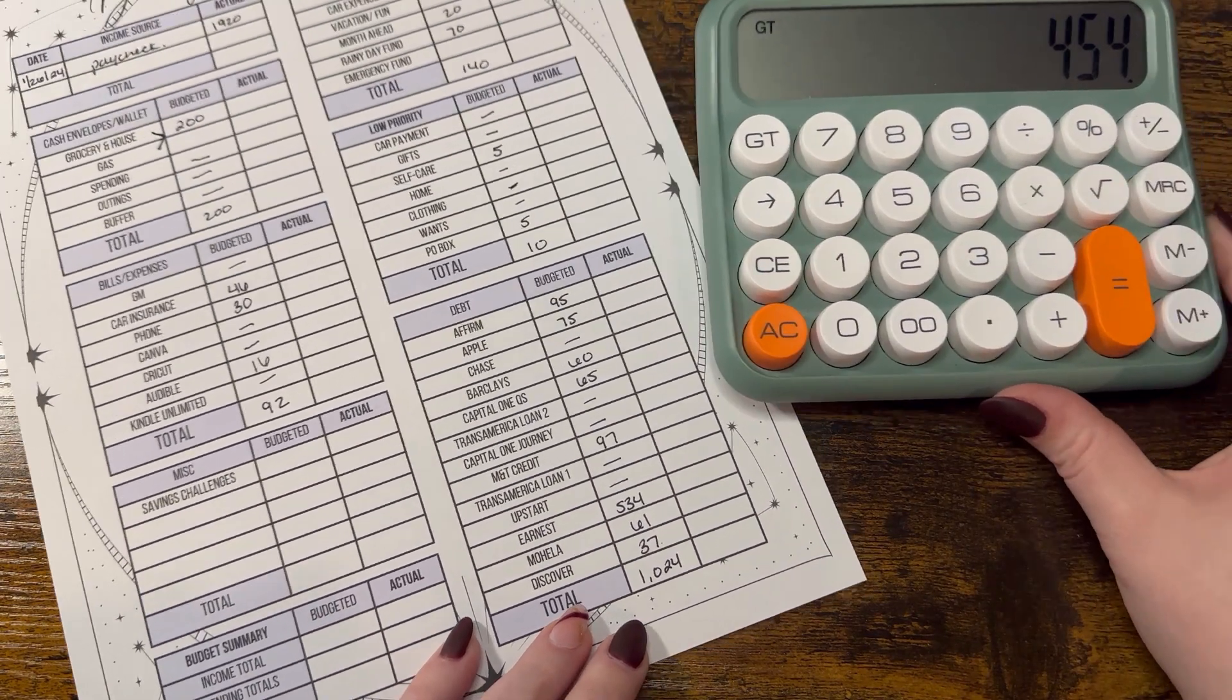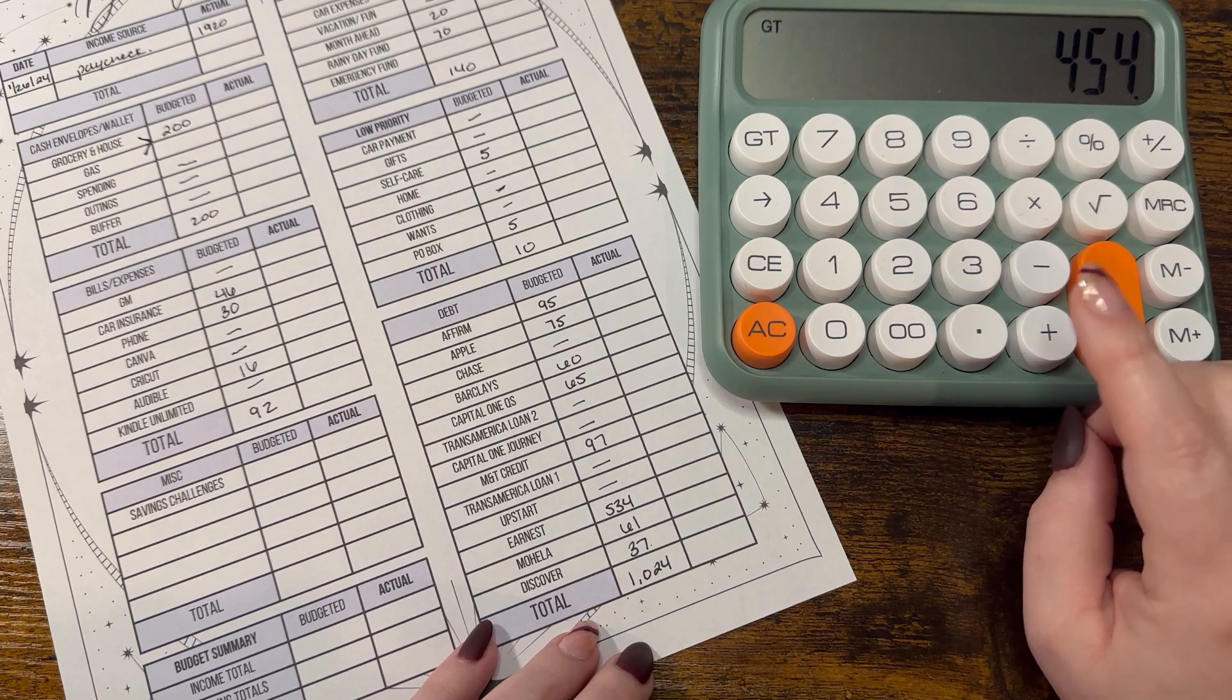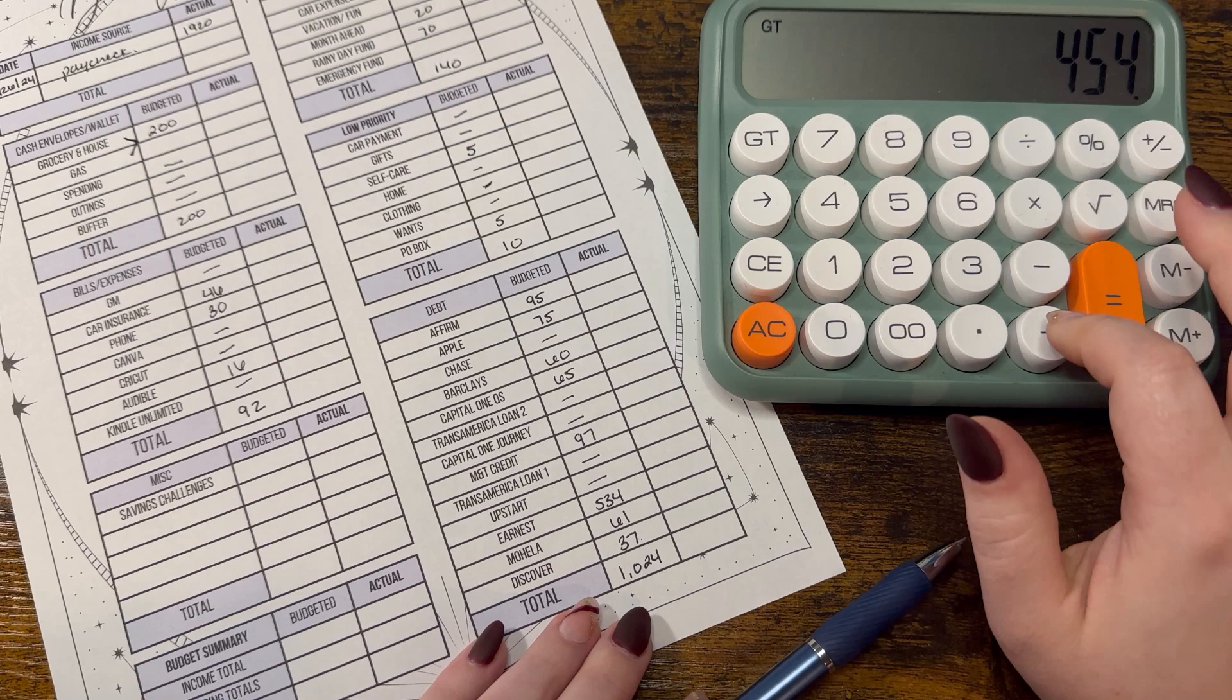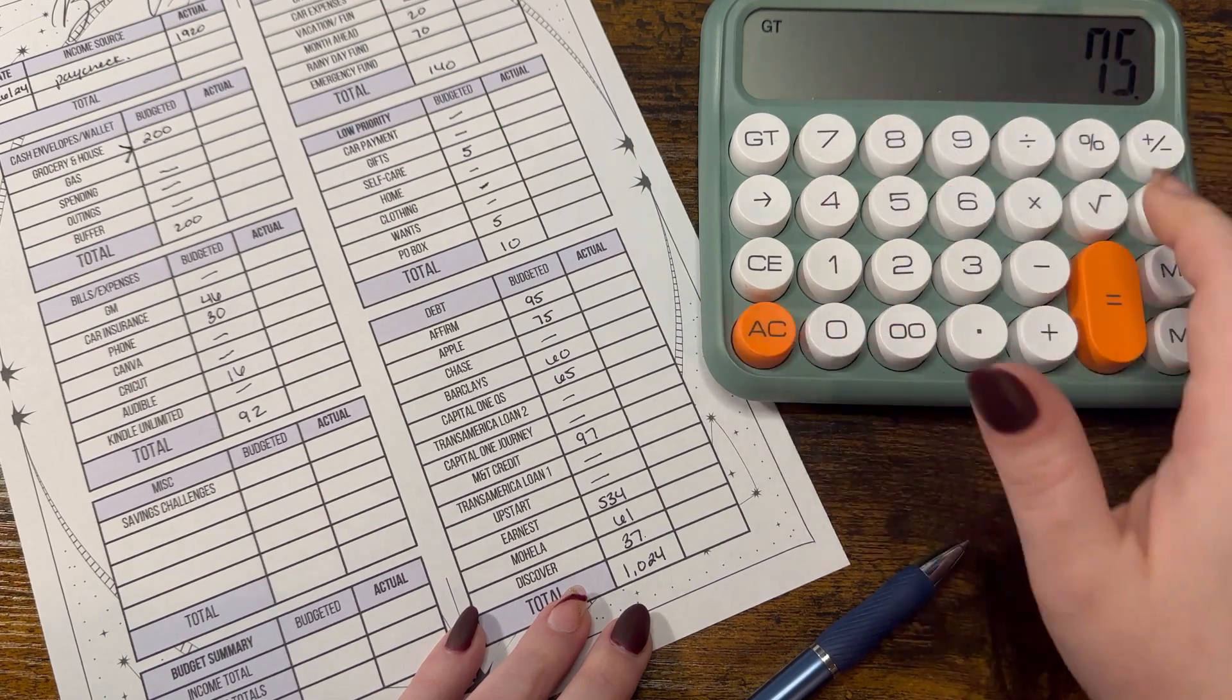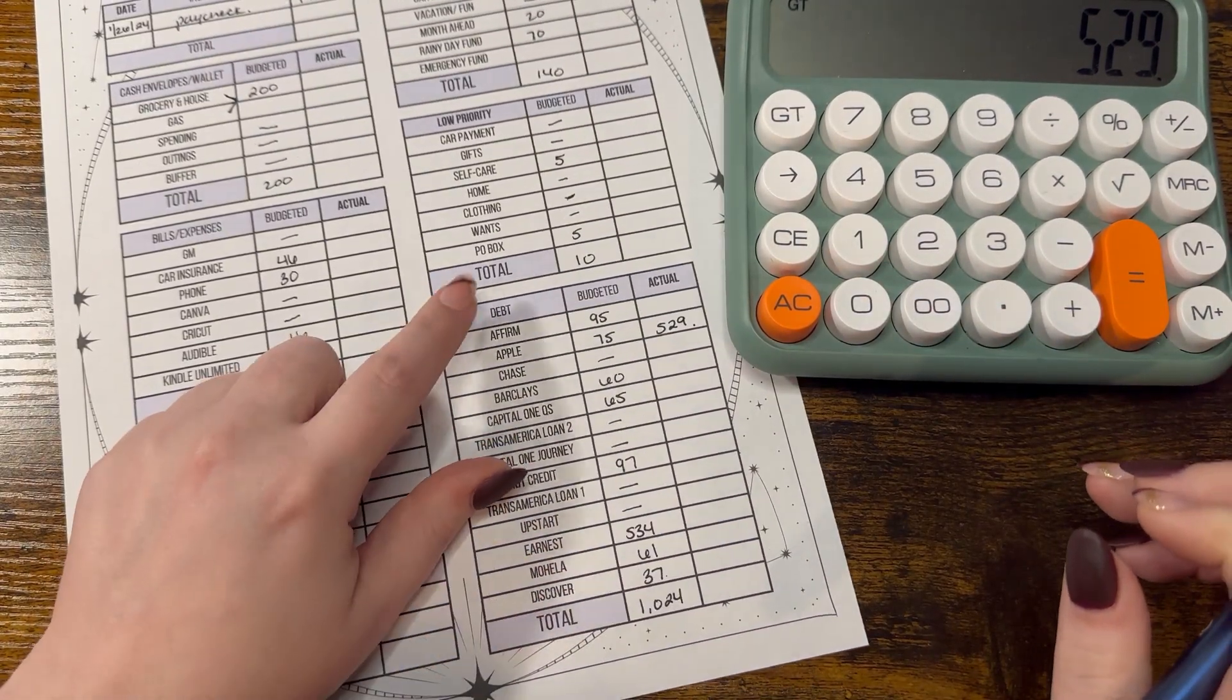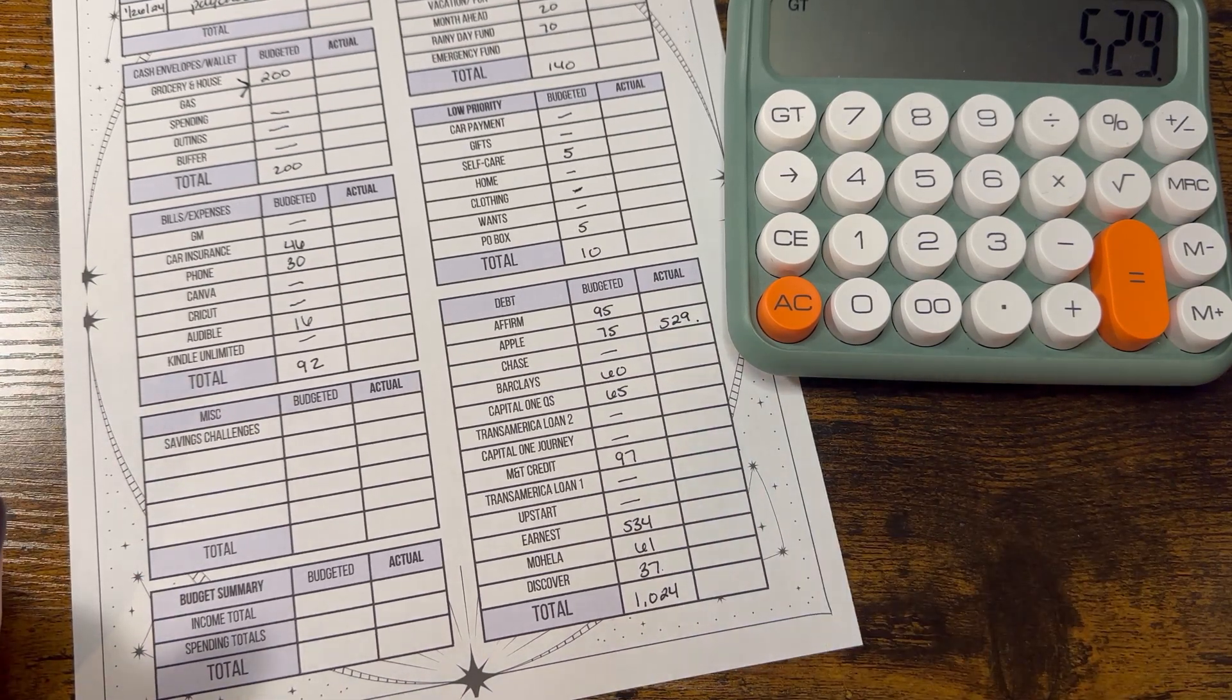So that leaves me with $454 left over and that is going to go straight to my Apple. So we're going to do $454 plus the $75 equals, so right here we're going to put under actual it's going to be $529 is going to go towards my Apple card payment because my goal is to get that fully paid off in February so hopefully we reach that goal.